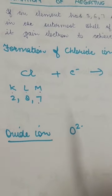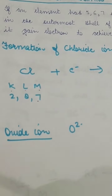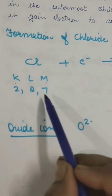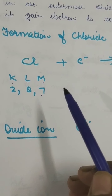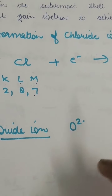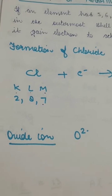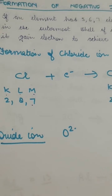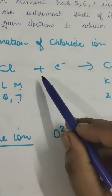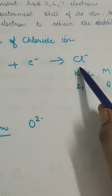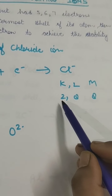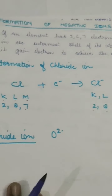Chlorine has K, L and M configuration with 2, 8 and 7 electrons. In the outermost M shell, it has 7 electrons because the atomic number of chlorine is 17. Since one is missing, it wants to acquire the nearest configuration of the noble gas argon, so it will accept 1 electron and become the chloride ion (Cl⁻) with 1 minus charge. The configuration will now be 2, 8 and 8. Same in the case of oxygen - oxygen will become oxide ion (O²⁻) with 2 negative charge because oxygen has atomic number 16 and will accept 2 electrons.